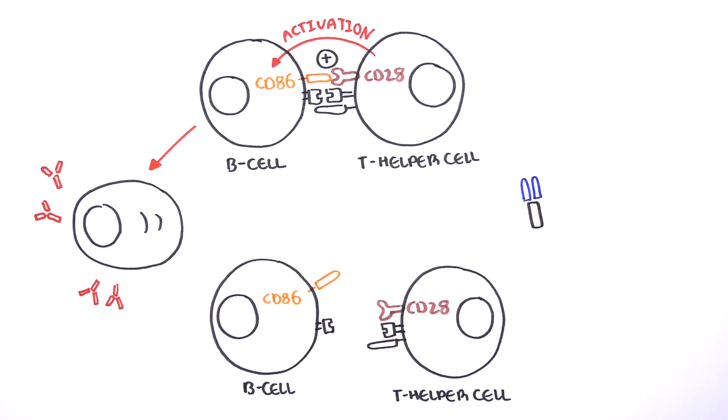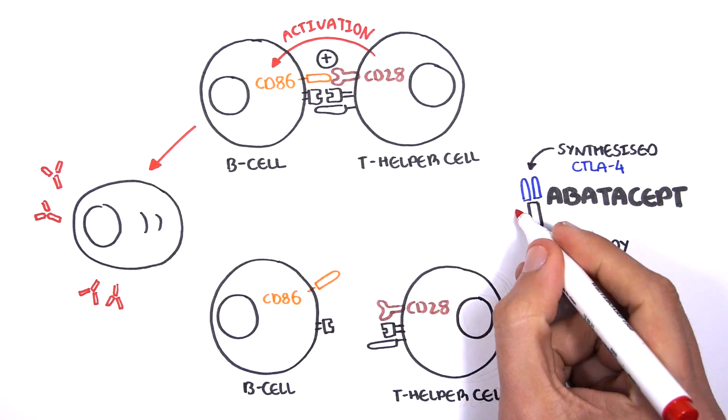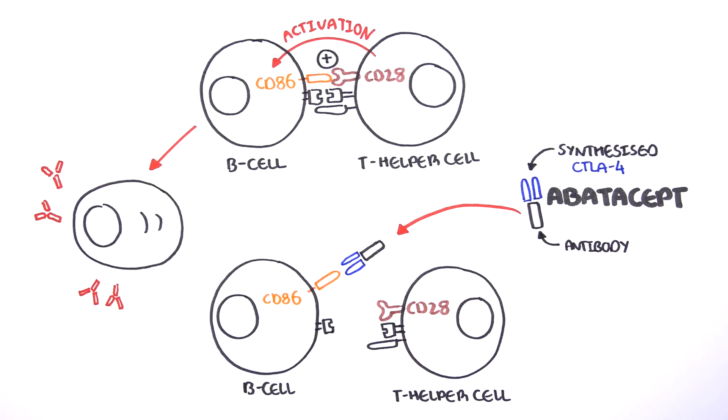Abatacept is a synthesized CTLA-4 connected to an antibody. Abatacept is injected into the bloodstream, where it binds to CD86 on the surface of B cells.